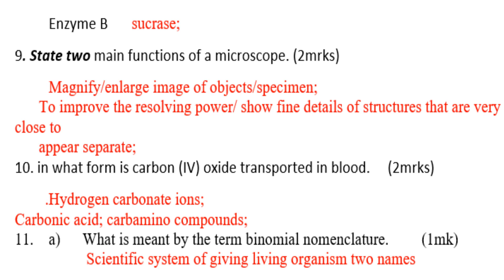Number 10: in what form is carbon dioxide transported in blood? That is as hydrogen carbonate ions, carbonic acid, and carbamino compounds. That is how carbon dioxide is transported in blood.